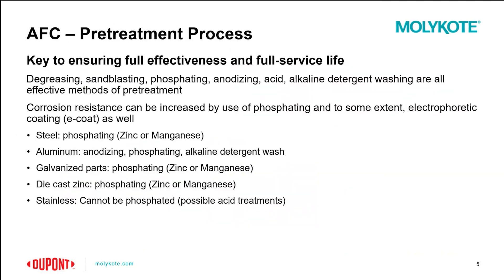Let's look at the AFC pretreatment process. In order to have a very effective coating, pretreatment is very critical. You want to make sure that you degrease the surface at the very least, but we also recommend things like sandblasting, phosphating, anodizing, acid treatment, and different detergent washings. It's very important that you have a surface that the AFC is actually going to adhere to, because that's going to be the first place you could potentially see a failure. Below, based on different substrates, we recommend for steel: phosphating with zinc or manganese; for aluminum: anodizing, phosphating, or alkaline detergent wash — and so on with the different substrates.